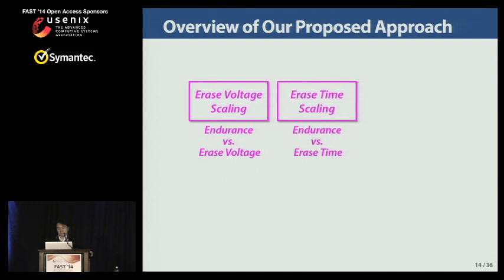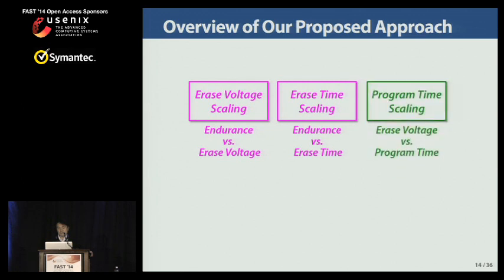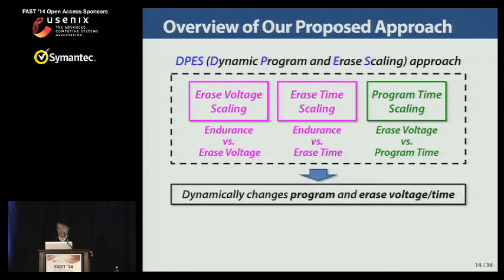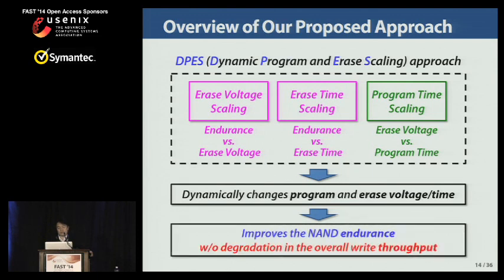Our proposed approach is motivated by the NAND device physics model on endurance degradation. Erase voltage scaling exploits the trade-off relationship between endurance and erase voltage, and erase time scaling exploits the trade-off between endurance and erase time. Program time scaling is necessary for writing data to NAND blocks erased with different erase voltages. By combining these device-level scaling techniques, we propose a new system-level approach called Dynamic Program and Erase Scaling, or DPS, which dynamically changes program time and erase voltage and time depending on workload condition, improving NAND endurance without degradation in overall write throughput.